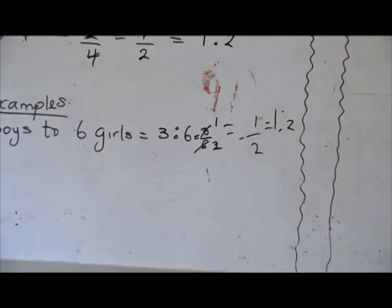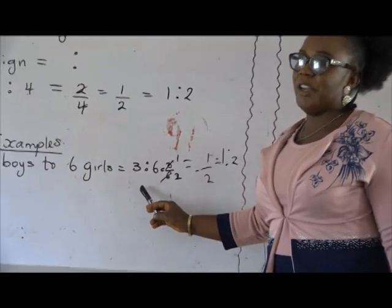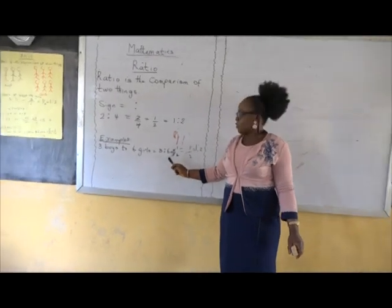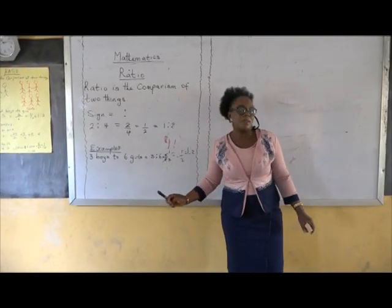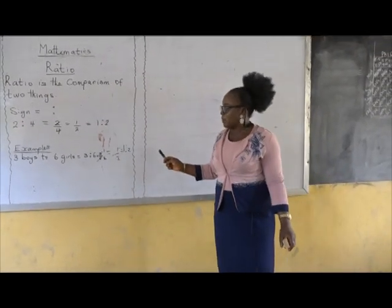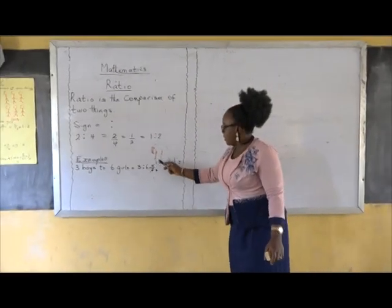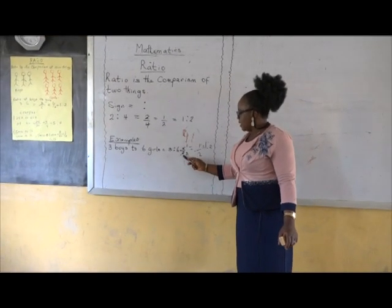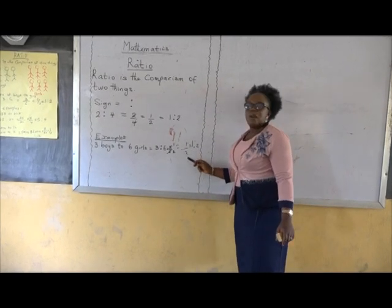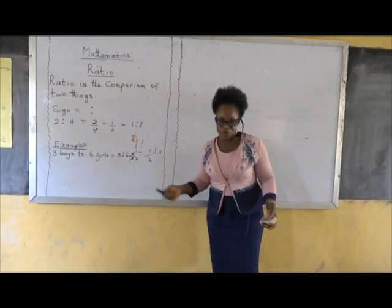Three boys to six girls — we have three ratio six. We want to write it as a fraction: three over six. Now we want to reduce it to the lowest term. We divide by three: three in three gives us one, three in six gives us two. We have one over two. Now we write it as a ratio — one ratio two.